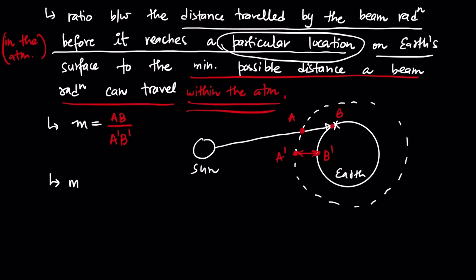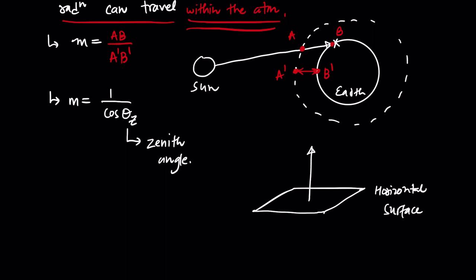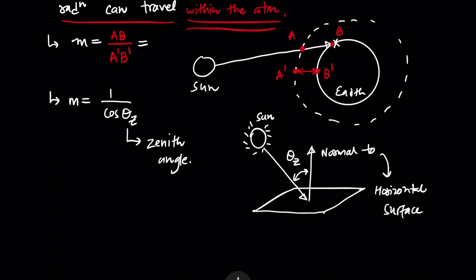Mathematically, there is another formula for air mass: m = 1 / cos(θz), where θz is the zenith angle. The zenith angle is defined as follows: suppose this is a horizontal surface on the Earth. The normal to the horizontal surface is drawn, and the angle between the beam radiation and that normal to the horizontal surface is known as the zenith angle. We will talk about solar angles and solar geometry in detail in the next lecture.